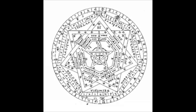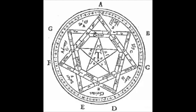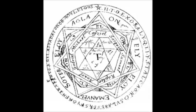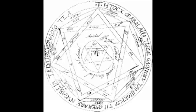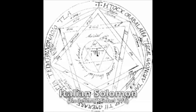Following this is the Sigillum Dei Aemeth of John Dee from the late 1590s. Athanasius Kircher composed his own version of the Sigillum Dei Aemeth in 1652. Next, in a version of the grimoire of Solomon in Latin and another in Italian, we find the latest versions of the Sigillum Dei Aemeth prior to the 20th century.